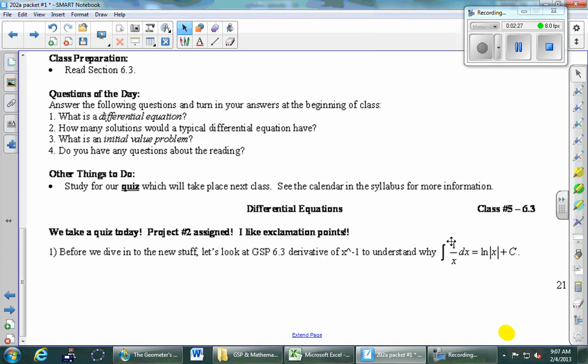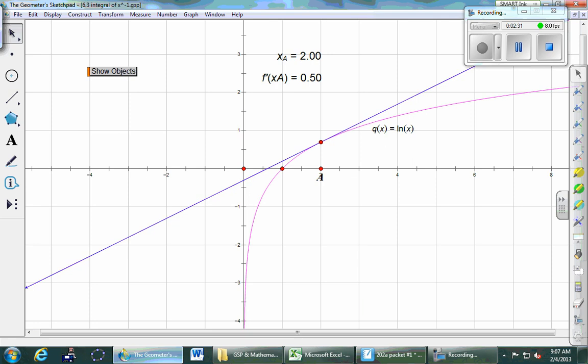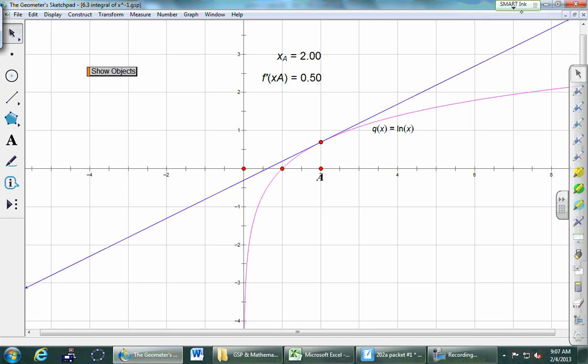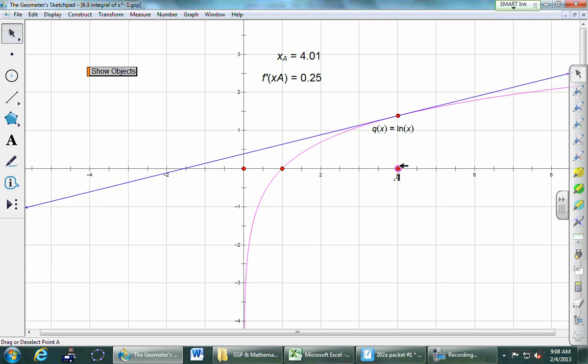It is the absolute value. Right? I'd be quite comfortable saying integral one over x is just ln x without this absolute value. So why does that come in? So let's take a quick look at this sketch pad thing that I made. So the purple graph there is ln of x, and the blue graph is the tangent line, and you guys know the derivative of ln of x is one over x. So the slope of that tangent line is one over whatever the x coordinate is.